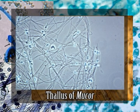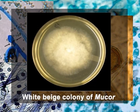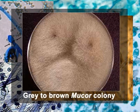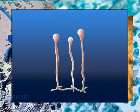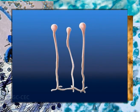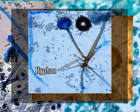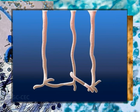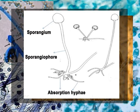The thallus is eucarpic and mycelial. Colonies of this fungus are typically white to beige; older colonies become grey to brown in color due to development of spores. These are very fast growing and on culture medium may grow to several centimeters in height. The hyphae are coarse, coenocytic, and richly branched, with branches usually tapering to fine points. Septa may develop at later stages to separate older or injured parts. The mycelium growing on substratum can be distinguished into absorption hyphae, which penetrate the substratum and absorb food, and sporangiophores, the bulk of aerial hyphae.